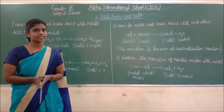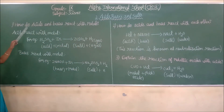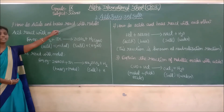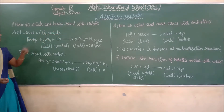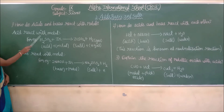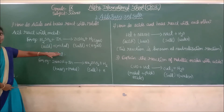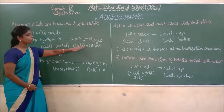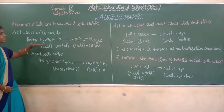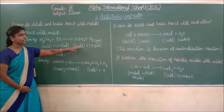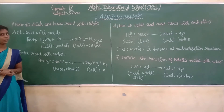Now we are going to revise the 3-mark questions for the second lesson: acids, bases and salts. First question: how do acids and bases react with metals? When H2SO4 (acid) reacts with zinc (metal), it gives salt plus hydrogen gas. When acid reacts with metal, it gives salt and hydrogen gas.